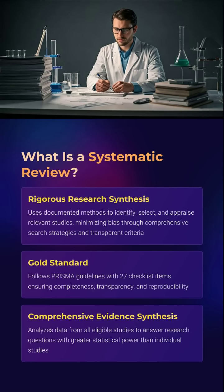A systematic review is not just a summary. It is a structured, transparent, reproducible synthesis of evidence, designed to minimize bias. It follows PRISMA guidelines — the 27-point checklist gold standard that ensures nothing is left to chance.